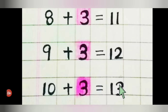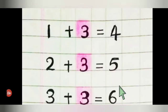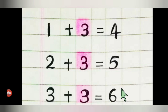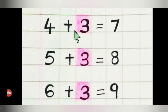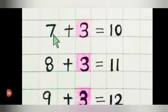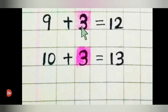Repeat once again. One plus three is four. Two plus three is five. Three plus three is six. Four plus three is seven. Five plus three is eight. Six plus three is nine. Seven plus three is ten. Eight plus three is eleven. Nine plus three is twelve. Ten plus three is thirteen.